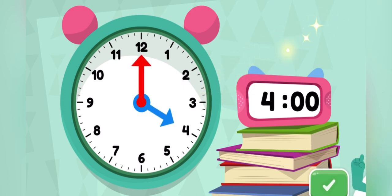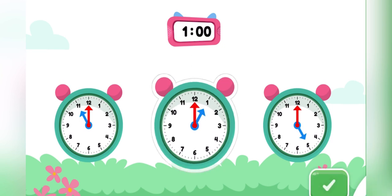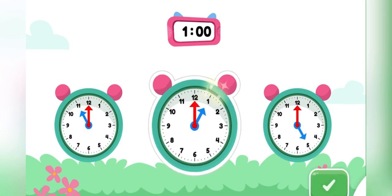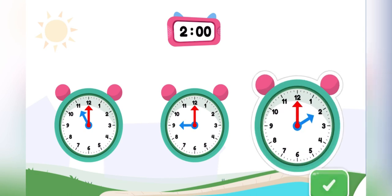Cool beans! Now let's look at some other clocks. Look at the time on the pink clock on top. Which green round clock says the same time? Yay! You made the clock show 1 o'clock. Tap the green clock that says 2 o'clock. Cool beans! You made the clock show 2 o'clock.